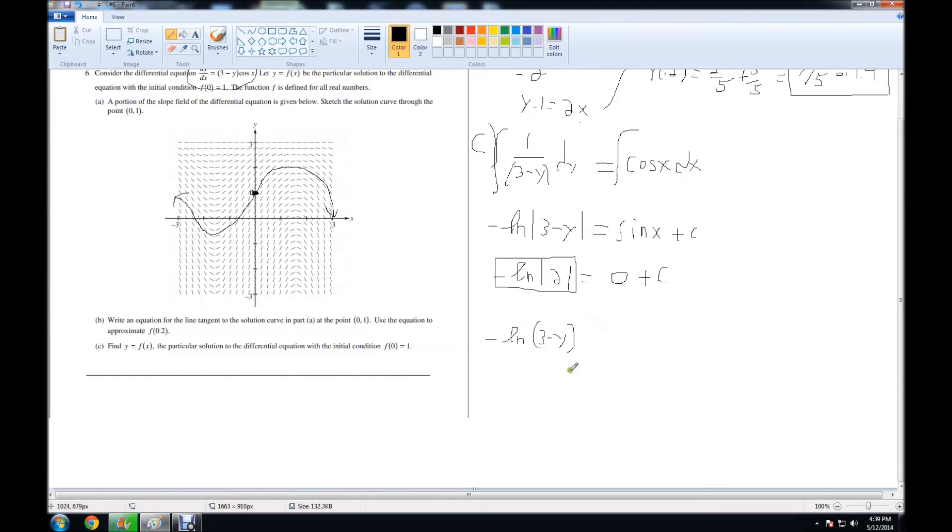the answer would still be negative natural log of 2 because it's the absolute value. However, when we go back to our original equation, we would have to multiply the inside by negative. So instead of (3-y), we would have (y-3). That is because after we plugged in the initial condition, we got a negative. However, in this case, since after we plugged in the initial condition we got a positive number, we leave it.